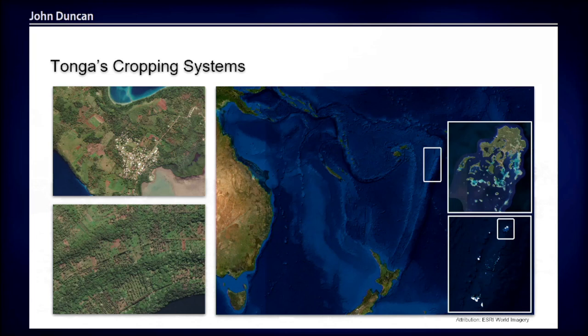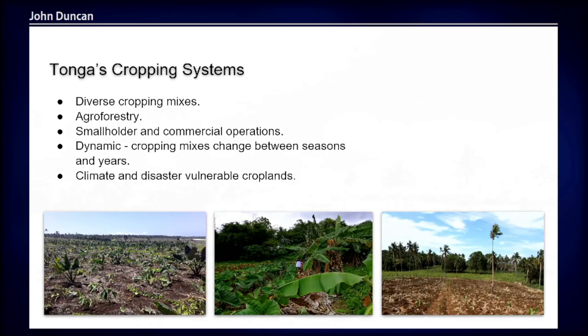It's a real mix of smallholder and subsistence operations, and then a few larger commercial farms targeting export markets. Agriculture makes up quite a significant proportion of GDP in the country, and a large proportion of the population are involved in agriculture, even informally or as part of their main source of income. As these satellite images show, there's a lot of variety in the patterns of agriculture in the landscape, and these are the kinds of landscapes we're trying to generate spatial data sets for.